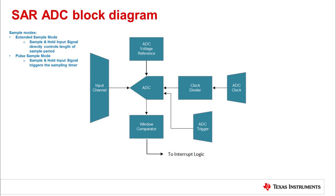Sampling ends and conversion starts when the sample and hold signal is unasserted. In pulse sample mode, the sample and hold signal triggers a sampling timer. The sampling timer controls the sample period instead of the sample and hold signal. After the timer expires, the conversion begins.